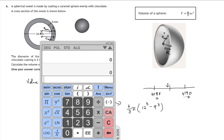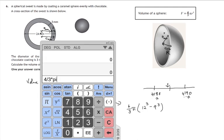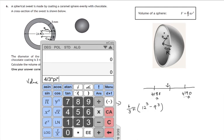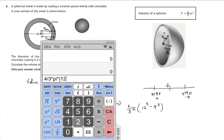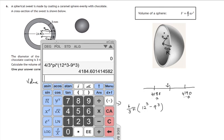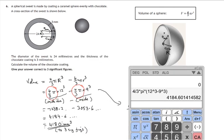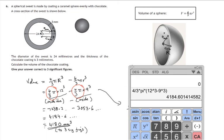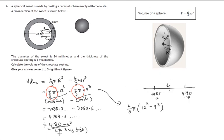So that's another way we might calculate that, where we would do 4 divided by 3 times pi times, and we need brackets here, 12 raised to the power 3, minus 9 raised to the power 3, close our brackets. And that again comes to 4184, rounded to three significant figures, 4180 as before. So either way, that's our answer.